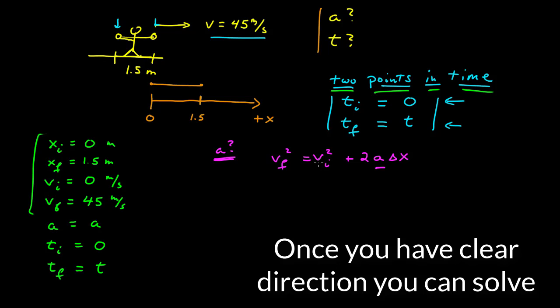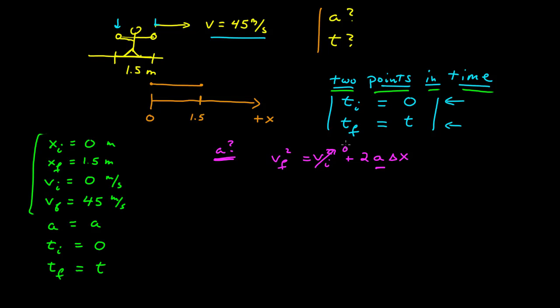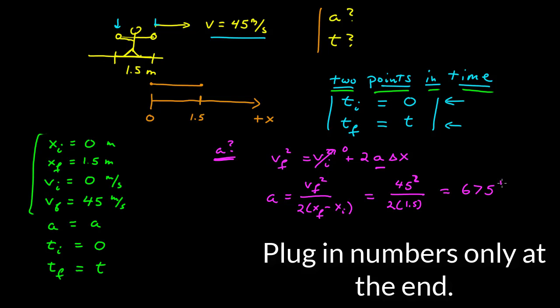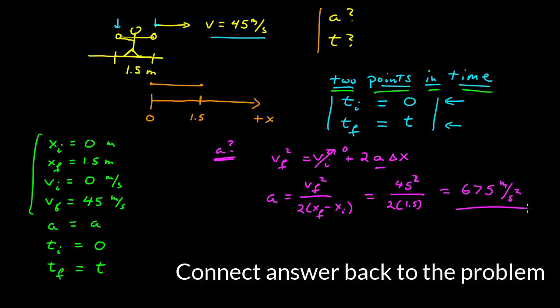So I'm going to go ahead and go to the solve section and do that. This is zero. The acceleration then is the final velocity squared over twice the displacement, which is the final position minus the initial position. And so this is 45 squared over 2 times 1.5. I can put that in my calculator, and I get 675 meters per second squared. I might take a moment out in awe of that a little bit.